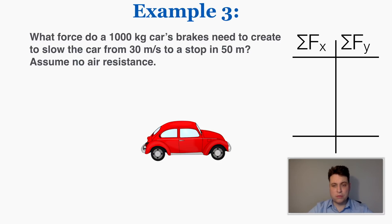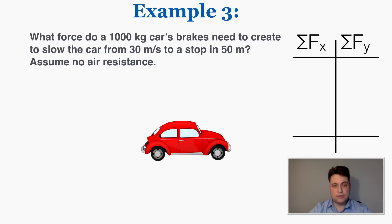Here's one more example. Newton's second law ties most of the material we've been talking about together — it connects unit 4 forces with unit 3 acceleration. What force do a 1,000-kilogram car's brakes need to create to slow the car from 30 meters per second to a stop in 50 meters? Assume no air resistance.